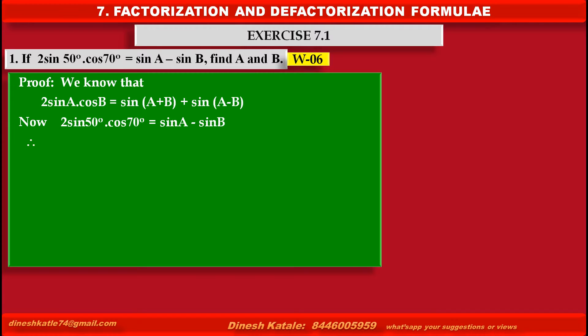Therefore, by using the defactorization formula, the left-hand side becomes sin(50°+70°) plus sin(50°-70°), which equals the right-hand side sin A minus sin B.